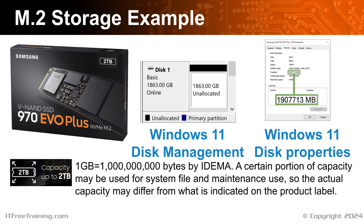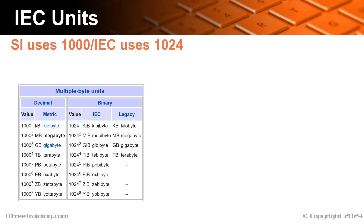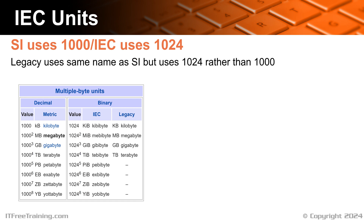There is a way to make this a bit clearer. However, Windows has not yet started to adopt this. Nowadays, SI units should use 1000 and IEC should use 1024. However, as we have seen in systems like Windows, legacy units are still used. That is, a legacy name uses the same name as the SI units, but uses a base of 1024 rather than 1000.